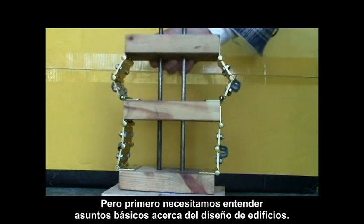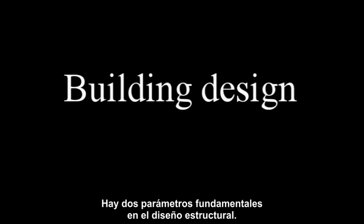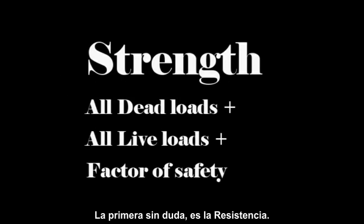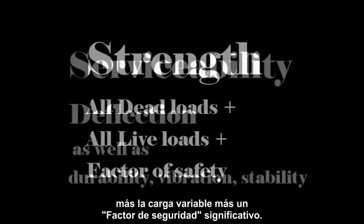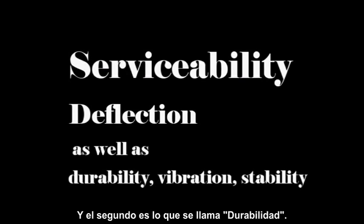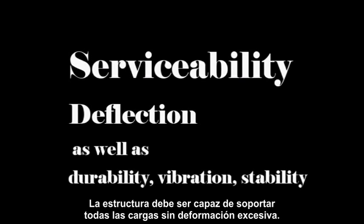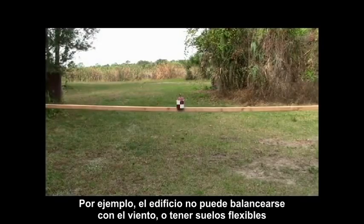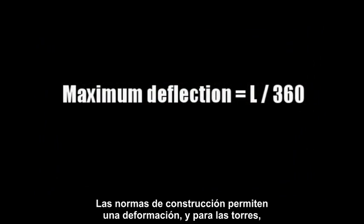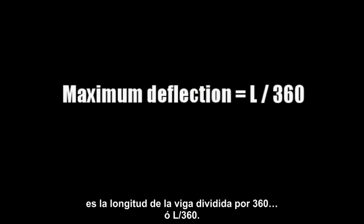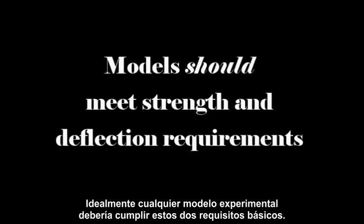Let's conduct some experiments to verify this. But first, we need to understand some basics about building design. There are two fundamental parameters of structural design. The first is strength — each component must be able to hold the dead load plus the live load plus a significant factor of safety. The second is serviceability: the structure must support all loads without excessive deflection. For example, the building can't sway in the wind or have bouncy floors, even though it may be perfectly strong. Building codes have an allowable deflection, and for the towers it's the beam length divided by 360, or L over 360. Any experimental model should meet these two basic requirements.